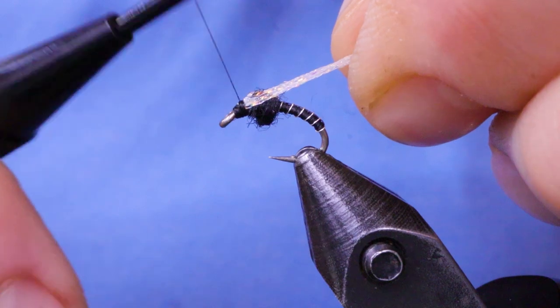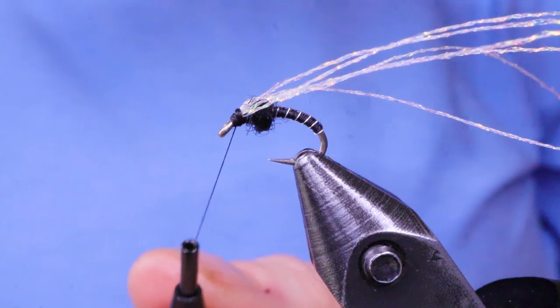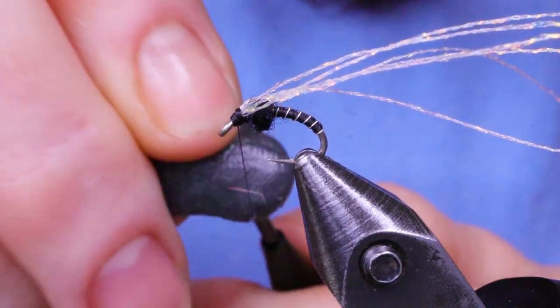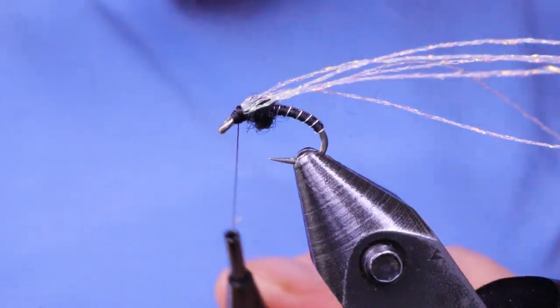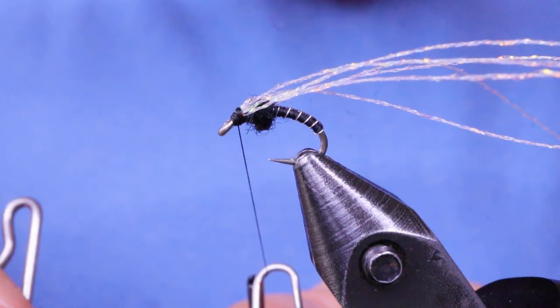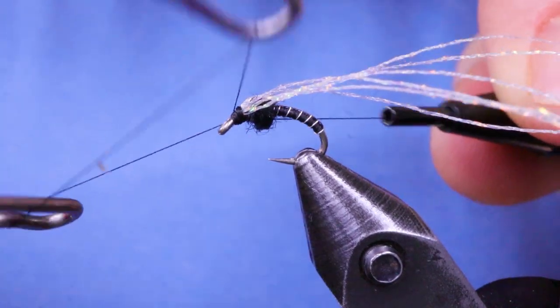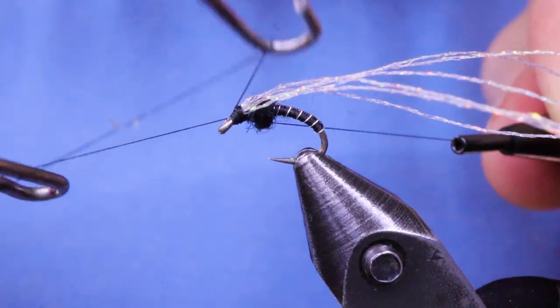And now I'm just going to wrap over top of these and build a nice black head on there. It's slipping again because of the micro glint. So I'm going to apply a little bit of wax. Also because I don't plan on using head cement on this fly. So the wax helps hold the whip finish a little bit better. And then just whip finish.